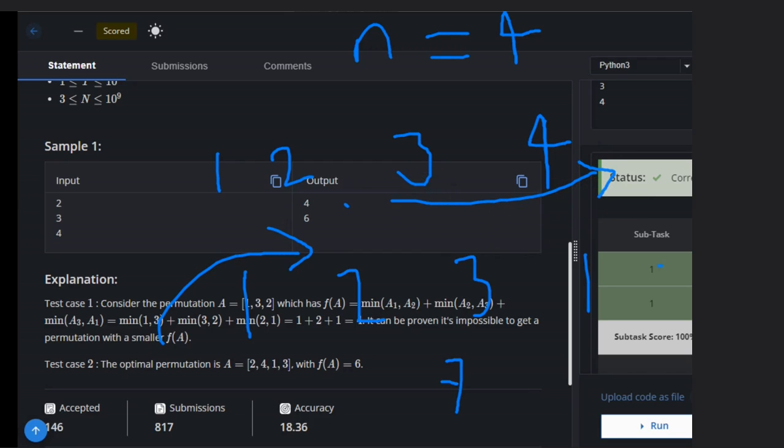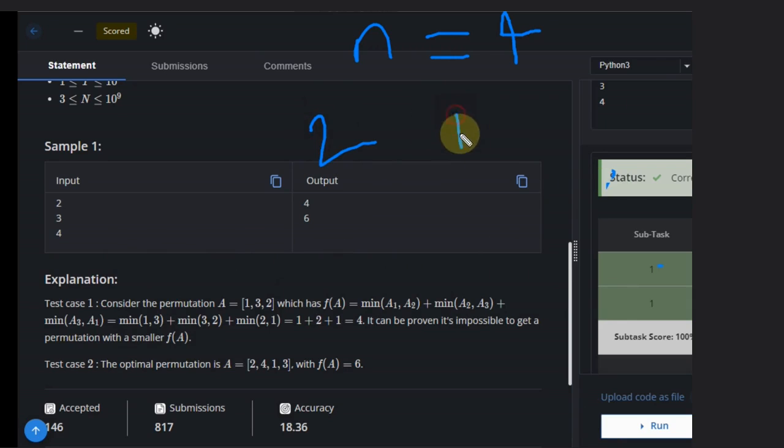So how can we rearrange? We can rearrange in the fashion like this: 2, 4, 1, 3. So what will it give? It will give 2, this will give 1, this will give 1, this will give 1, and this will give 2. So that is 6.